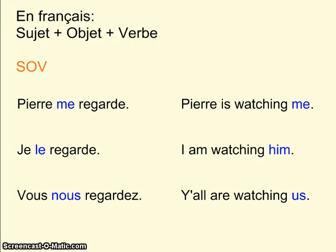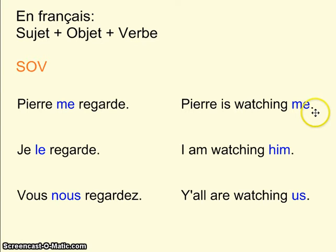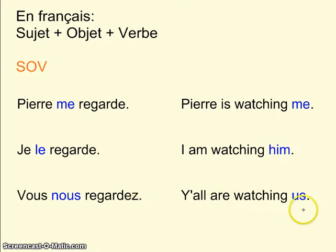En français, l'ordre — the order — l'ordre dans la phrase est très différent de l'anglais. En français, on met le sujet, puis l'objet, et puis le verbe. Sujet, objet, verbe. Comme ça: Pierre me regarde. En anglais, on dit 'Pierre is watching me.' Et l'objet, c'est à la fin. Je le regarde — I am watching him. Vous nous regardez — Y'all are watching us.